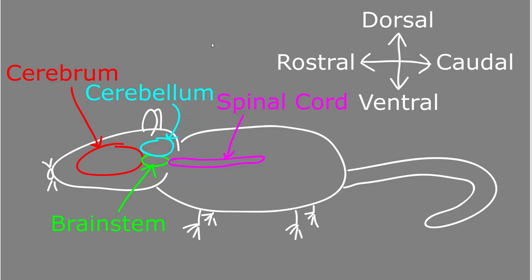As an example, we're going to take a rat. Here we have a rat standing on its four legs, and this is the standard anatomic position of a rat. In this position, the entire central nervous system is basically horizontal.